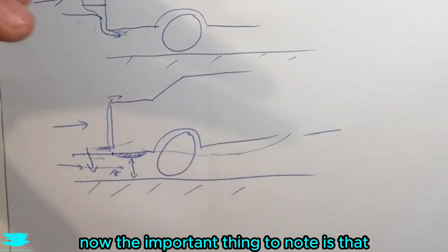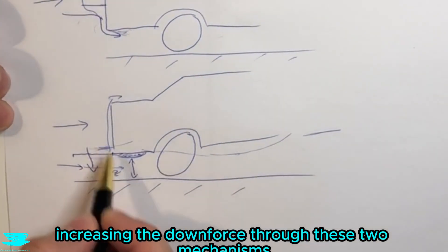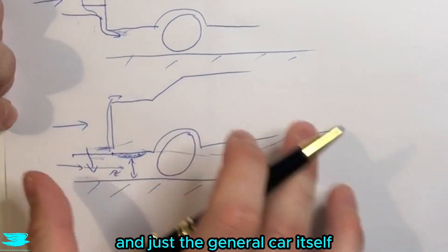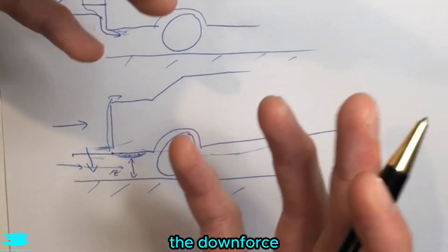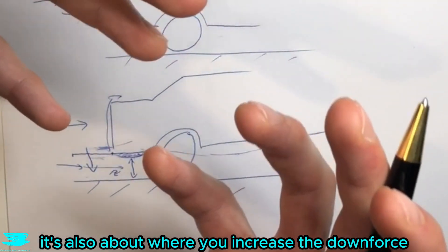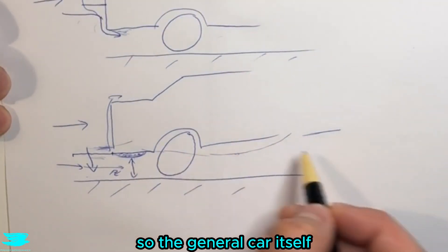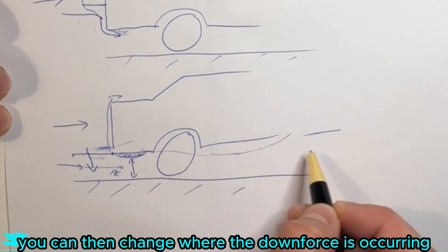Now the important thing to note is that increasing the downforce through these two mechanisms, and just the general car itself, is not just about decreasing the downforce, it's also about where you increase the downforce. So the general car itself, you can then change where the downforce is occurring.